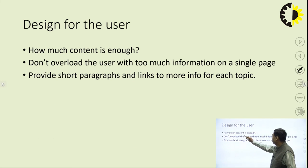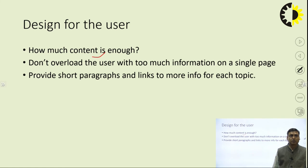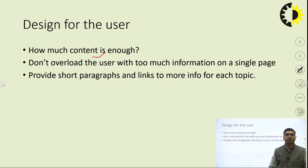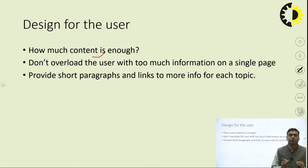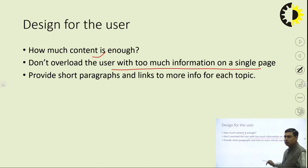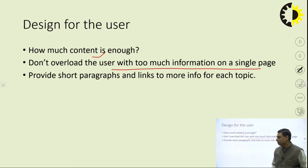How much content is enough? Giving too much information in the website is not suitable — just put the information that is needed for the user. Users want to understand information in a very limited time period; it is not a book. Putting accurate, clear, concise, and summarized information is what should go on the website. Do not overload the user with too much information on a single page — if needed, break it into multiple pages, provide short paragraphs, and link to more information for each topic.